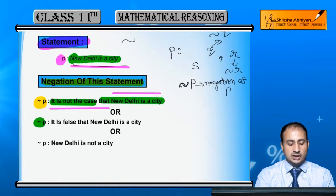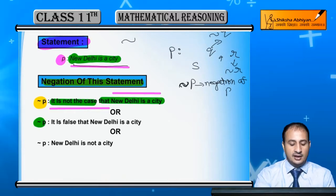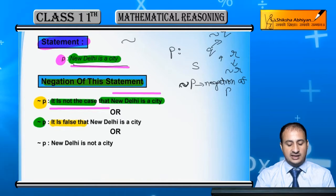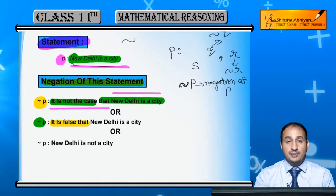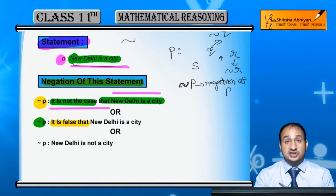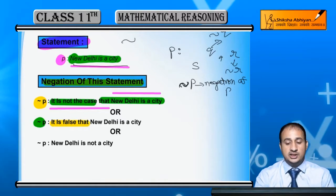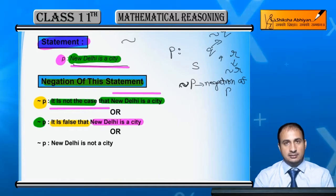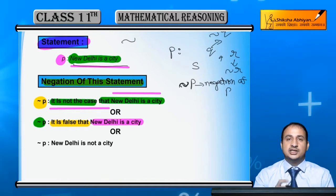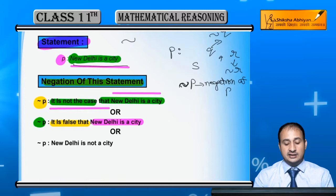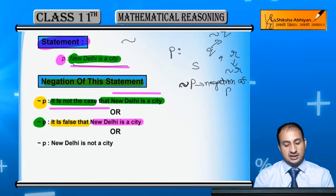Next mein negation of P ko is tarah bhi likh sakte hain - 'it is false that New Delhi is a city.' Yeh bhi negation ho gaya. 'It is false' - yeh galat hai - ki New Delhi is a city. Aap deny toh kar rahe hain P ko. Aap 'it is false that' jod dijiye aur aage statement likh dijiye.